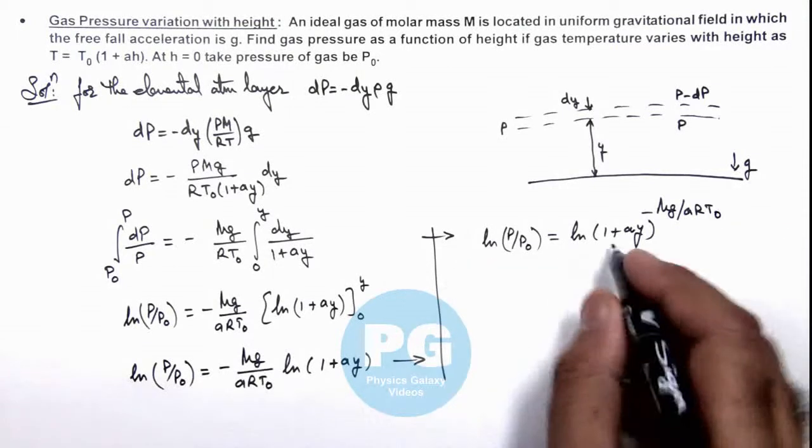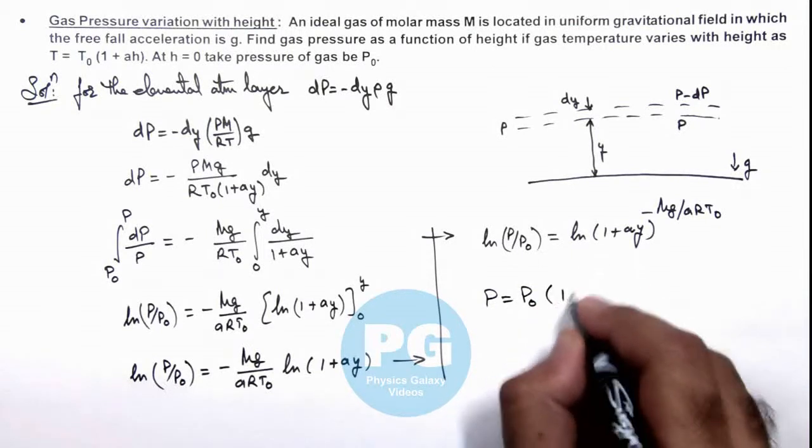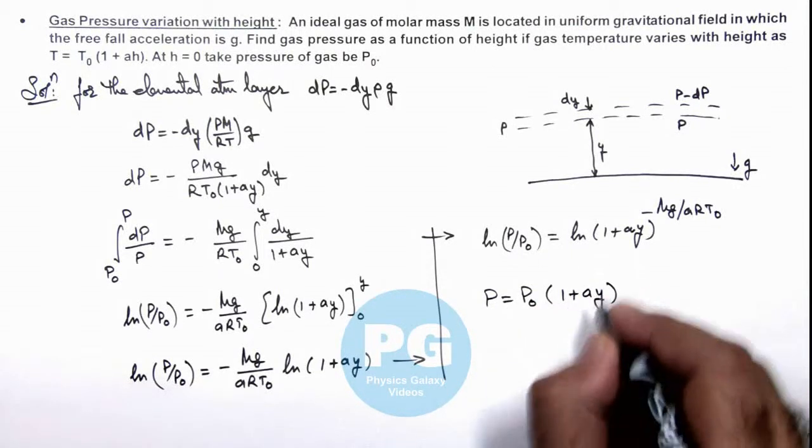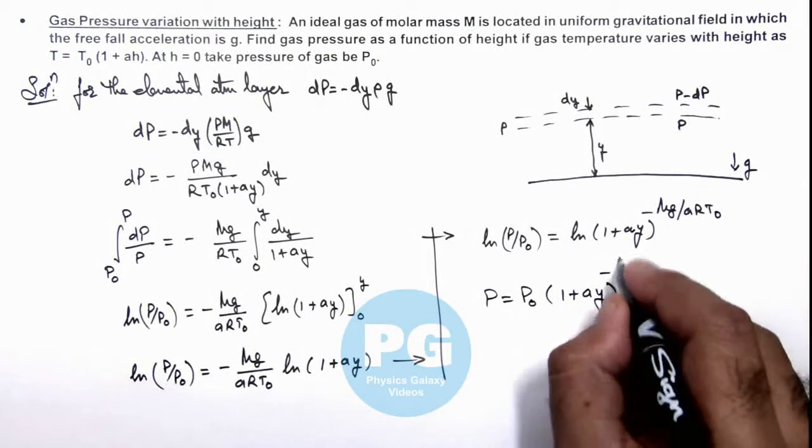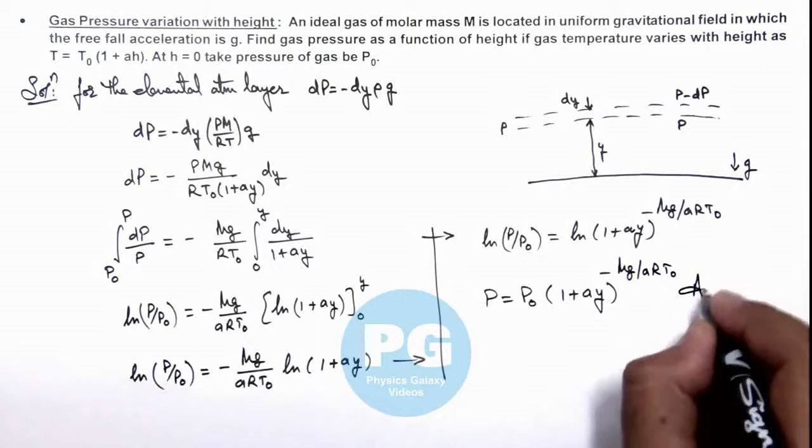If we take antilog on both sides we are getting the gas pressure as P = P₀(1 + αy) to power minus Mg/(αRT₀). So this will give us the final result.